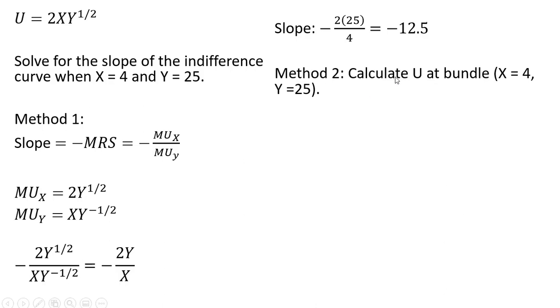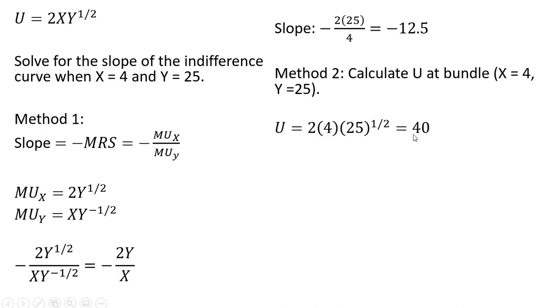Method two is to calculate u — utility — at the bundle. So we plug x equals 4 and y equals 25 into this utility function, and we see that u equals 40.